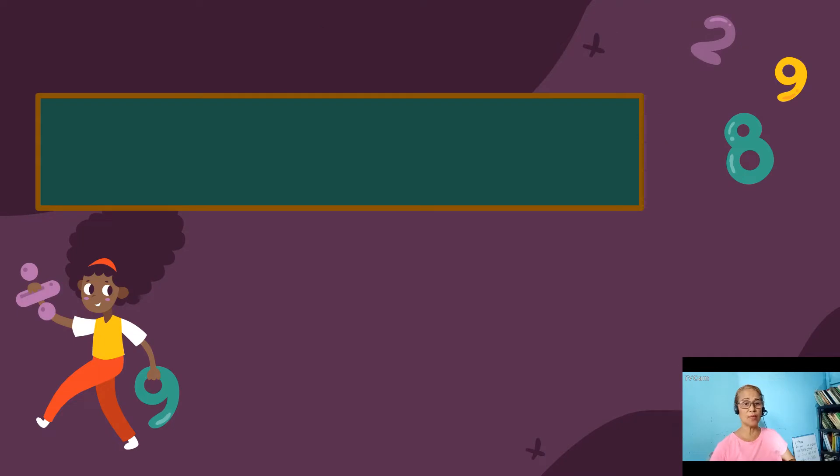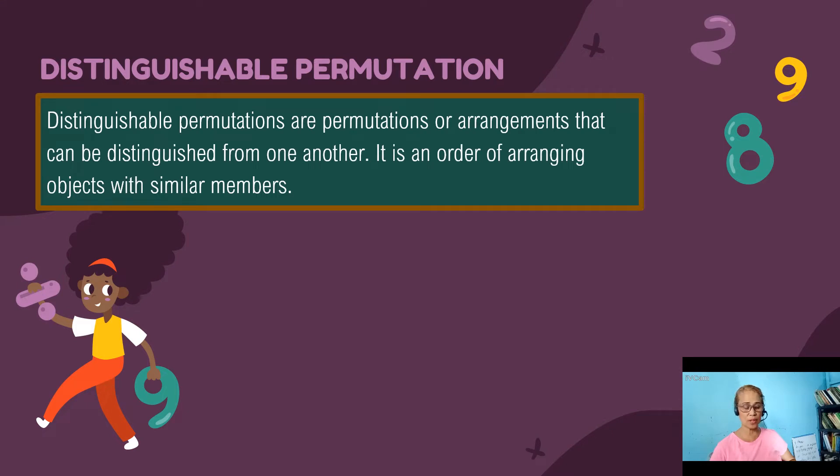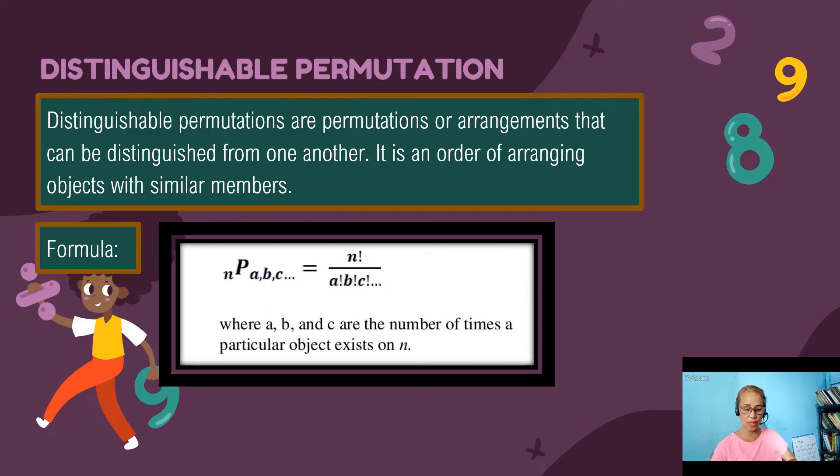The game that we had is an example of a distinguishable permutation. So what is a distinguishable permutation? It is an arrangement that can be distinguished from one another or it is arranging objects with similar members. Like in the name of Bob, B has been repeated twice. So we are going to use a different formula n P taken a, b, c where a, b, c are the members or the objects that are taken at a time. So let us use now this formula in the preceding examples.